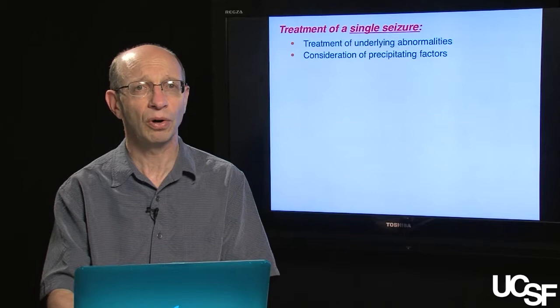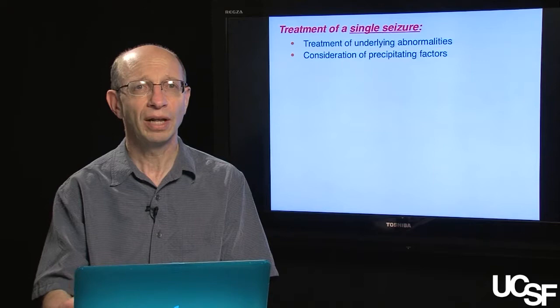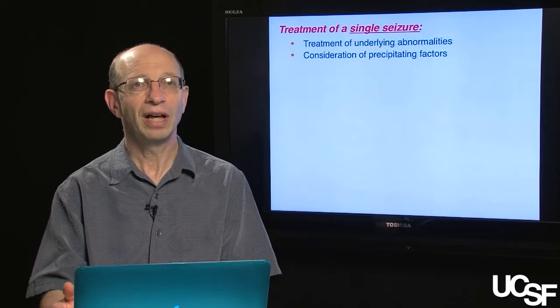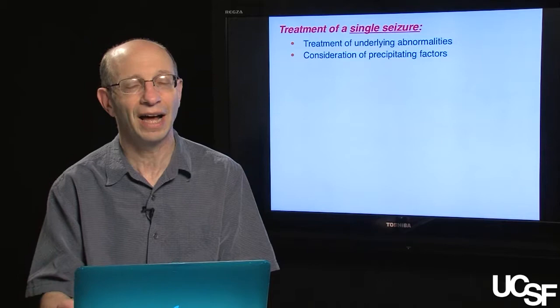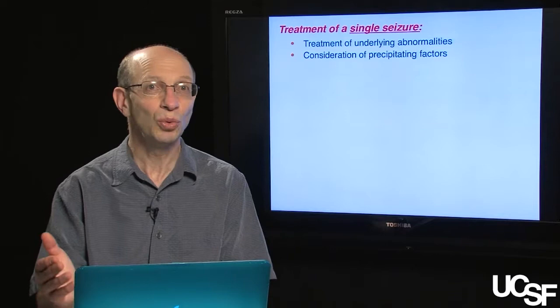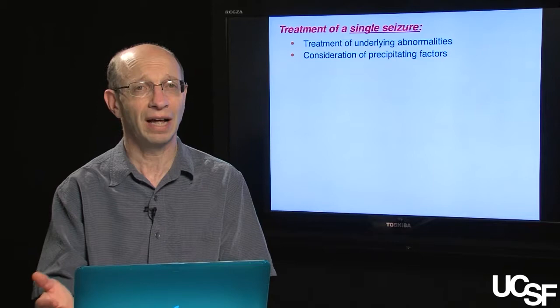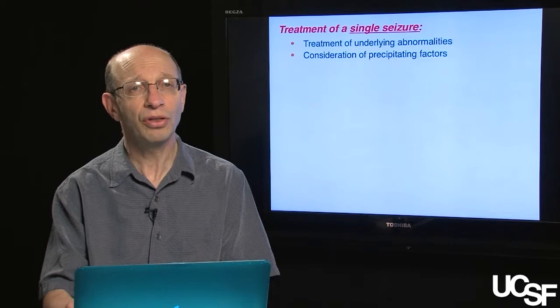The next thing to consider is whether there were any precipitating factors for the seizure — was there anything the patient was doing or exposed to that was an obvious precipitating factor? A common example would be someone who had their seizure in the setting of drug abuse, say the person was using cocaine and had a seizure a few hours later. In that circumstance, you wouldn't just want to put the patient on anti-epileptic drugs; the approach is to help the patient understand the relationship between using a stimulant like cocaine and having a seizure, and to figure out ways of avoiding this in the future.